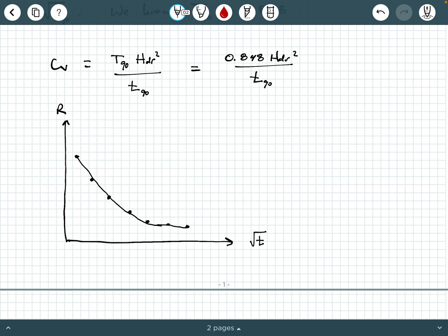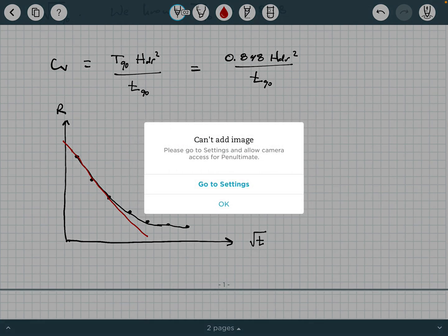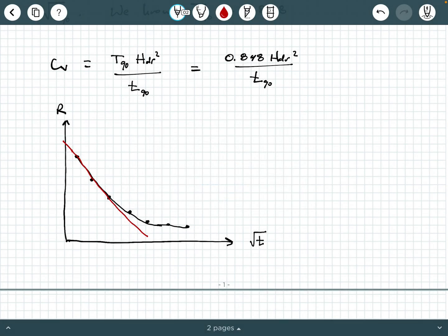And what do the directions say? It says draw a straight line through the initial part of the curve. So that's going to be roughly right here, the initial part of the curve. And you want to make that as straight as possible. So, you know, you use a straight edge if you're doing it by hand or use a line tool on Excel or Word.